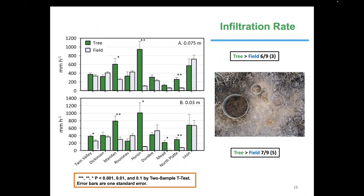We also measured infiltration, which is important because in a water-limited growth situation you want to capture as much precipitation as possible. We had less strong relationships here, partly because infiltration is a notoriously variable property. Six of the nine sites had greater infiltration under the trees, but only three were statistically significant. With the small ring we had a few more statistically significant differences, but generally a trend of greater infiltration underneath the red cedar trees.